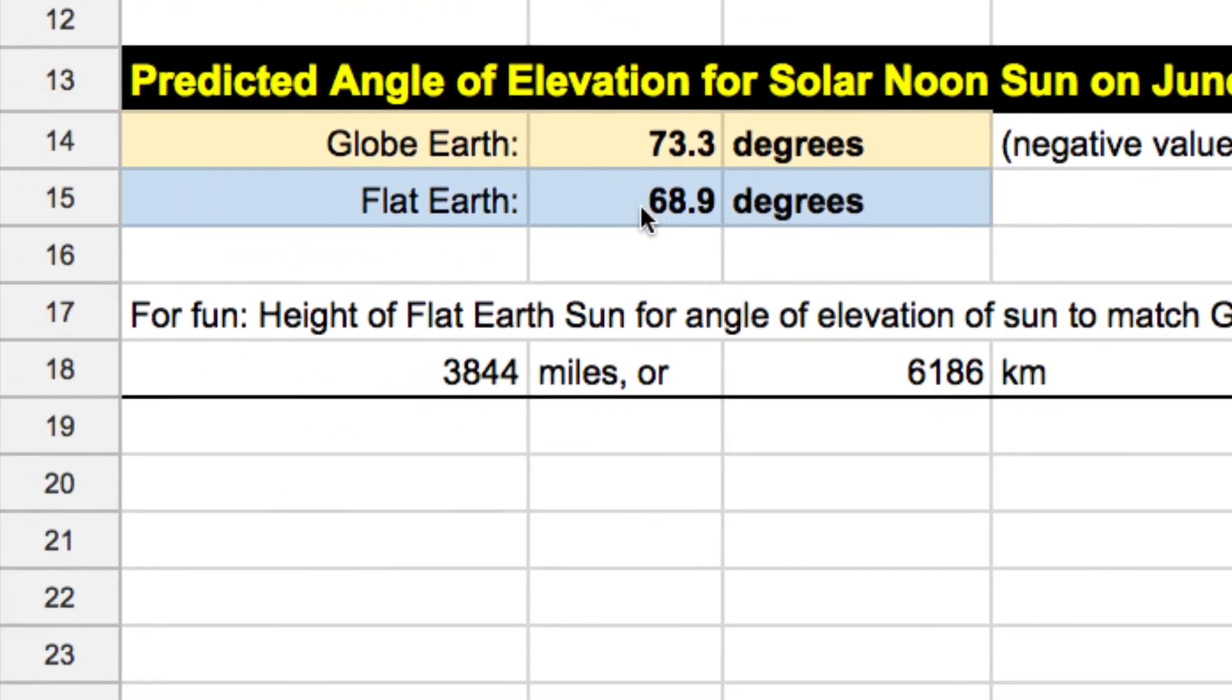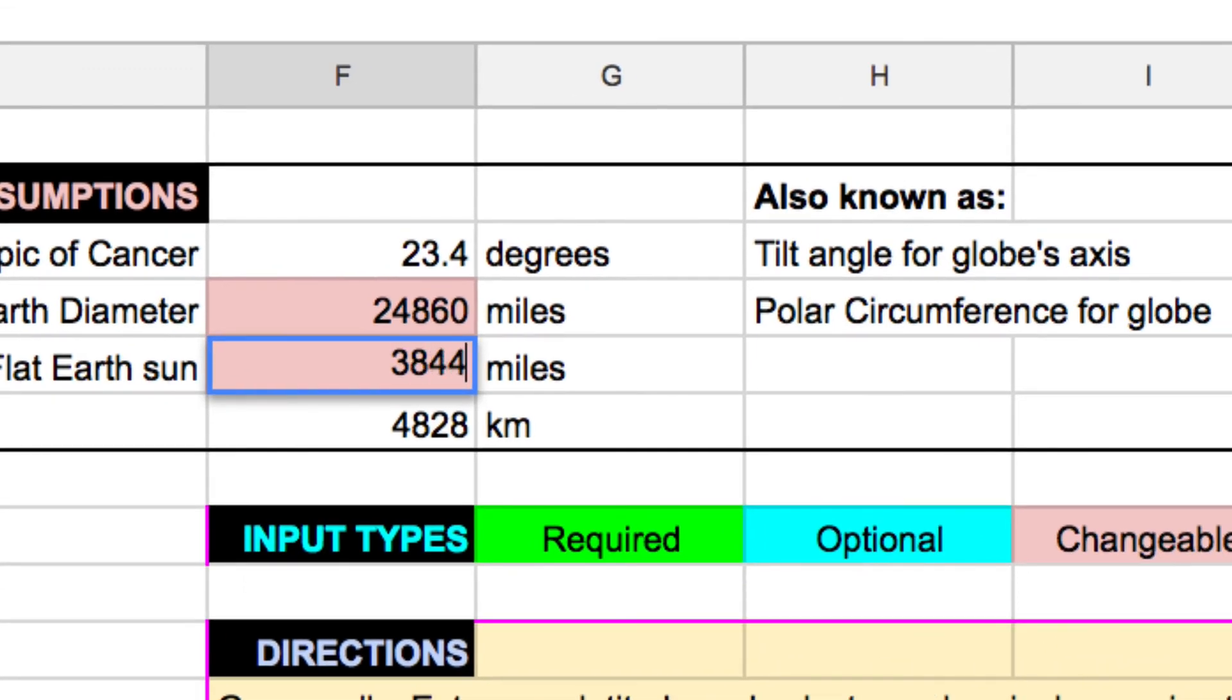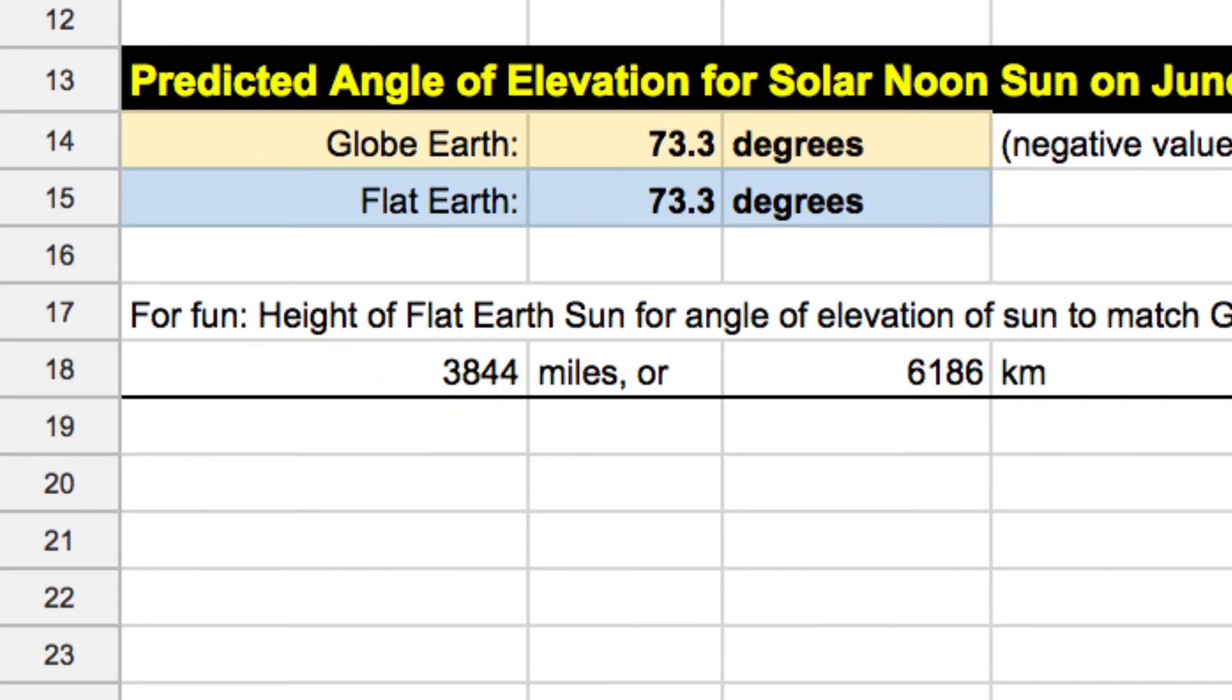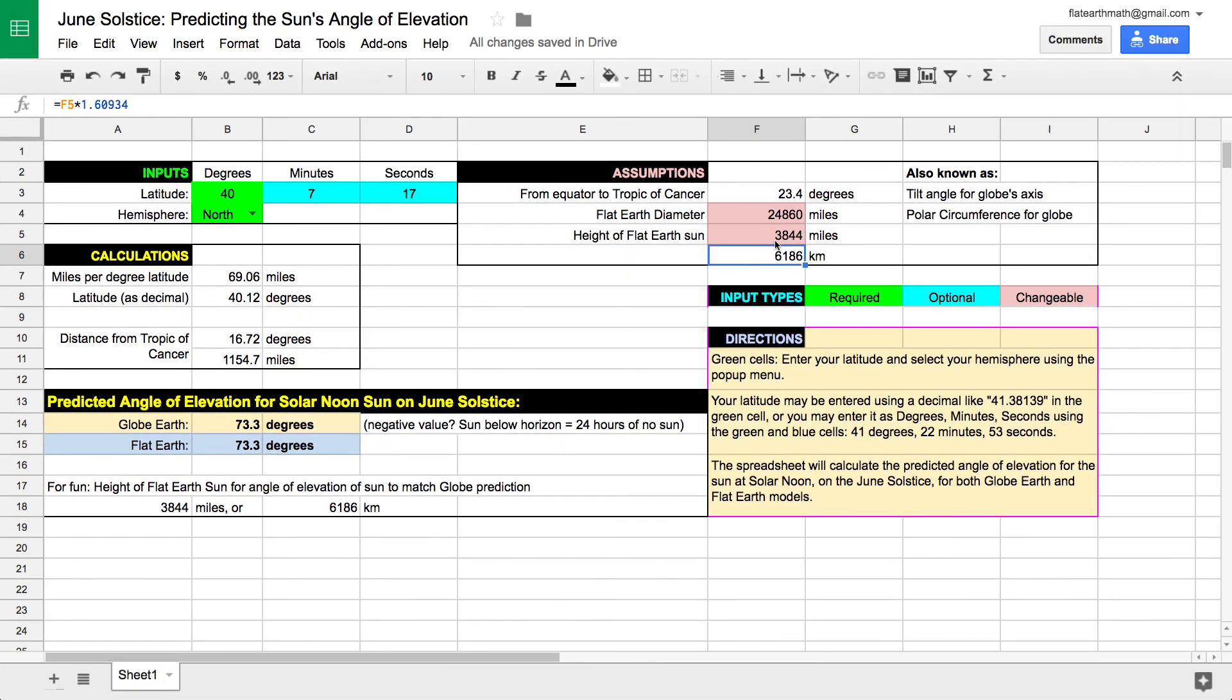Now, going back to the prediction, you can actually reverse engineer what the height of the flat earth sun should be. So based on your globe, the globe prediction, you could say, all right, well, the flat earth sun is 3844. So let's type in 3844, and then so now it'll recalculate everything. Anyway, you can just have some fun with the spreadsheet, and again, the link is in the description.